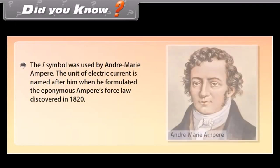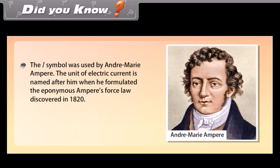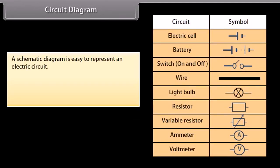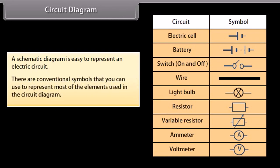The unit of electric current is named after André-Marie Ampère, who formulated Ampere's force law, discovered in 1820. A schematic diagram is easy to use to represent an electric circuit. There are conventional symbols used to represent most of the elements in a circuit diagram.